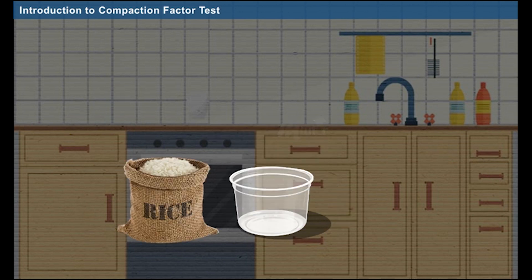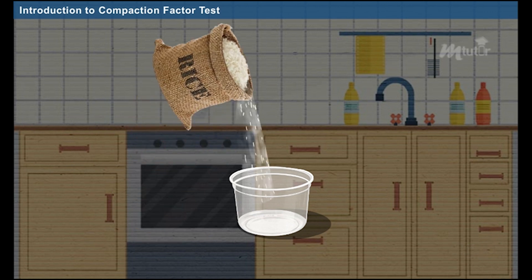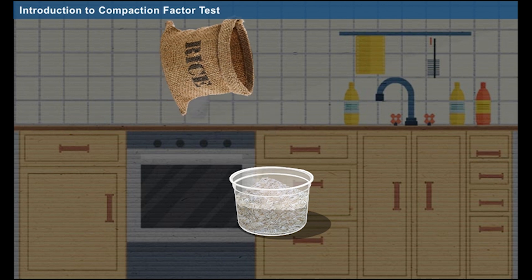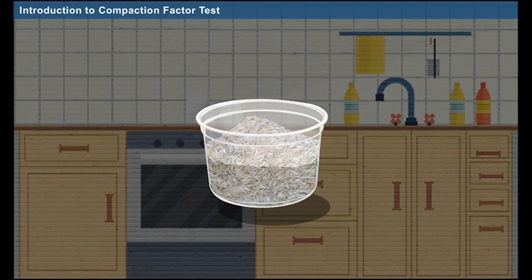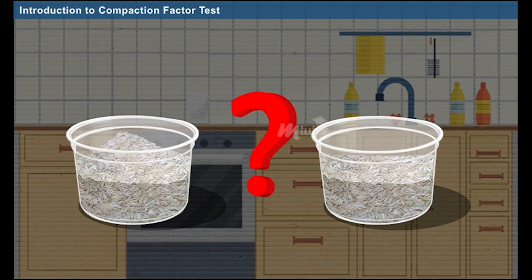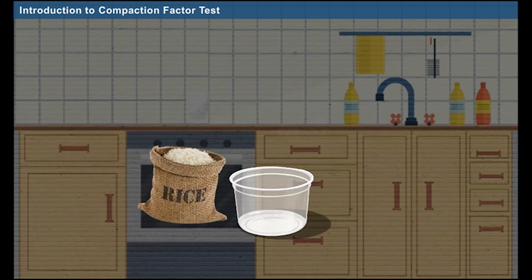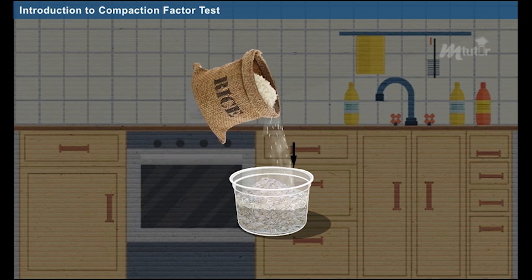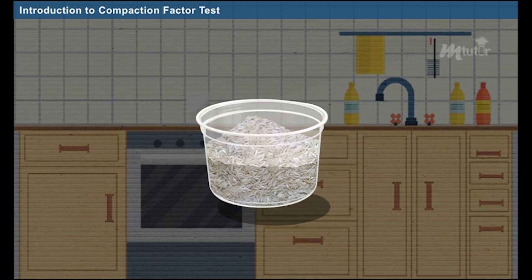In the same situation, what if the rice is poured into the container from a particular height? While falling from a certain height, the grains get compacted internally due to the gravitational force applied. Then, you shake the container externally. When you compare both the conditions, external energy for the first condition is more than the second condition. Do you know the reason for this? It is because the grains that fall from a certain height get compacted internally and then you shake the container externally.